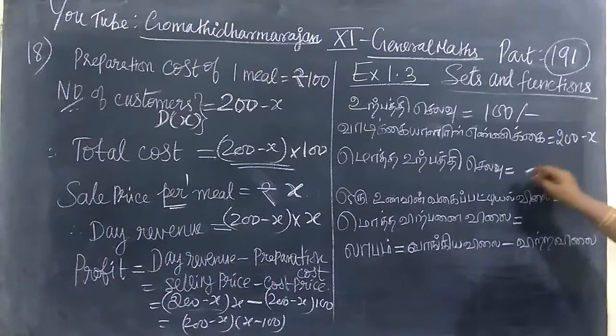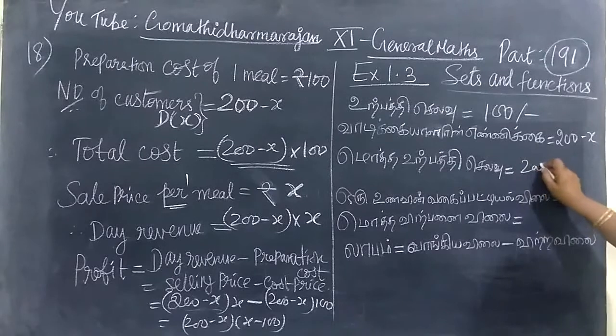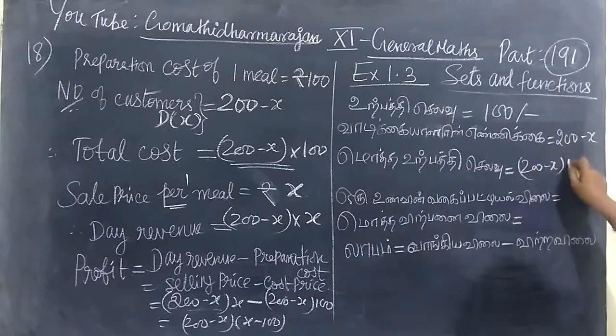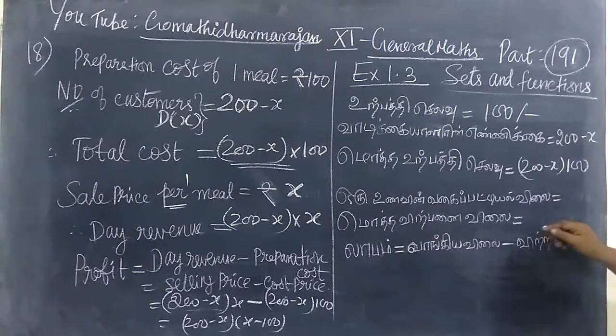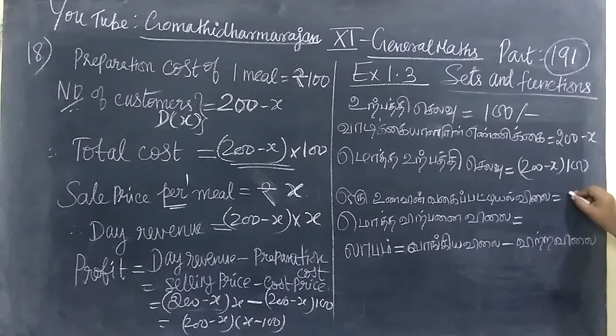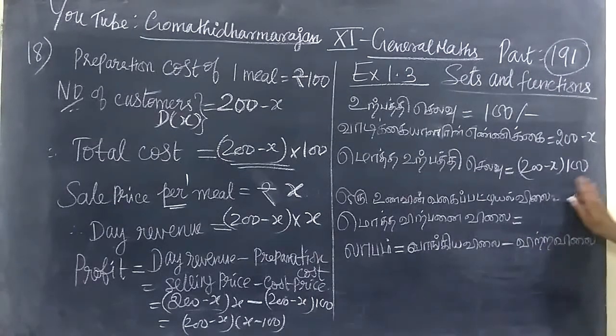200 minus x. The first step for this is 100. You can also use the alternative approach.